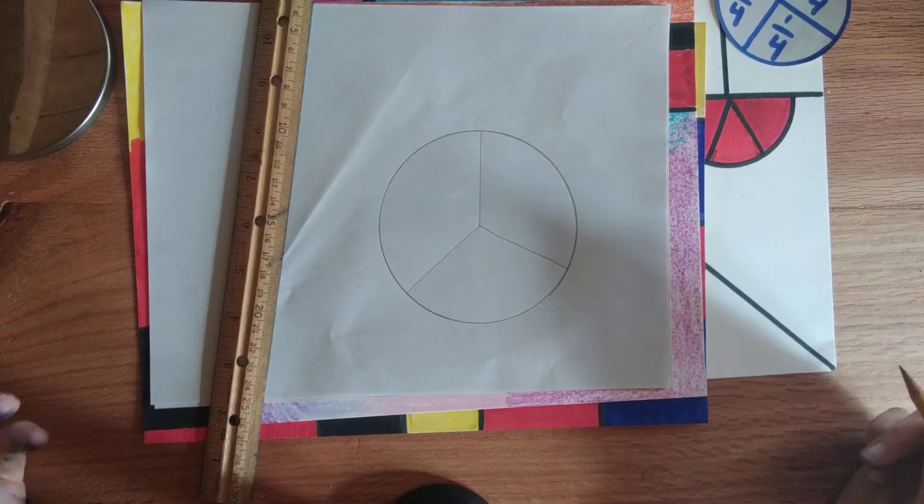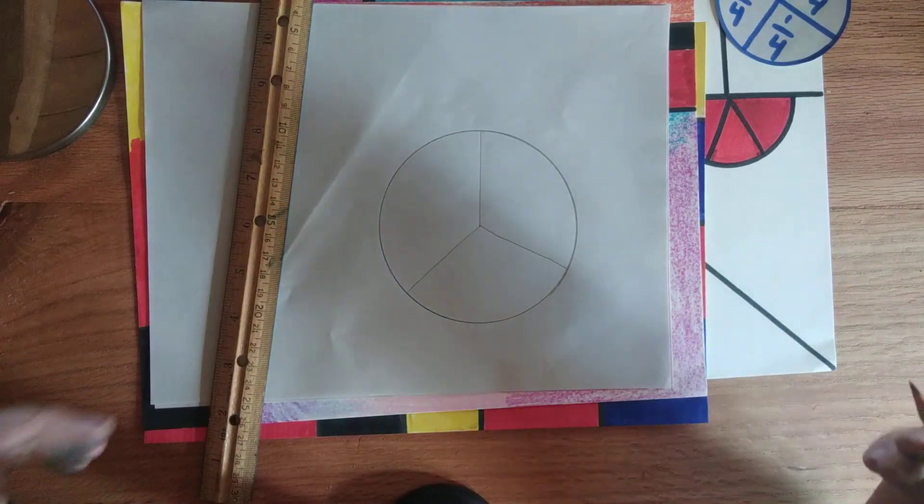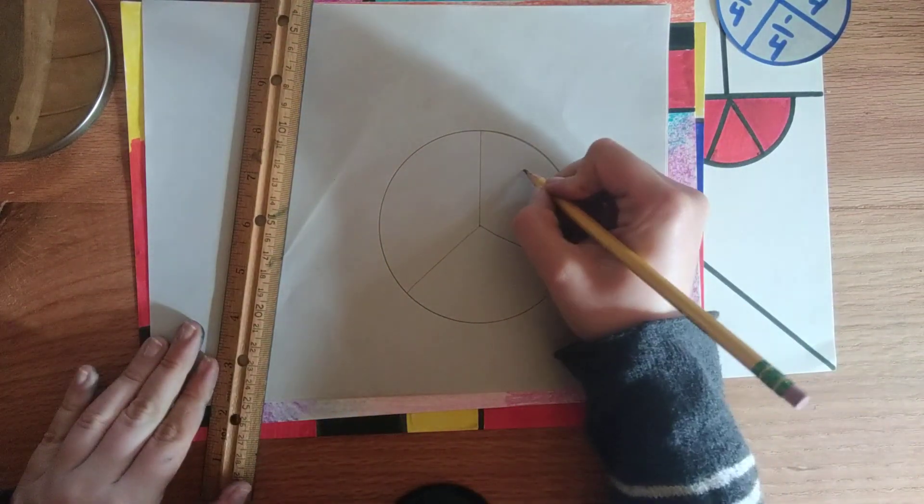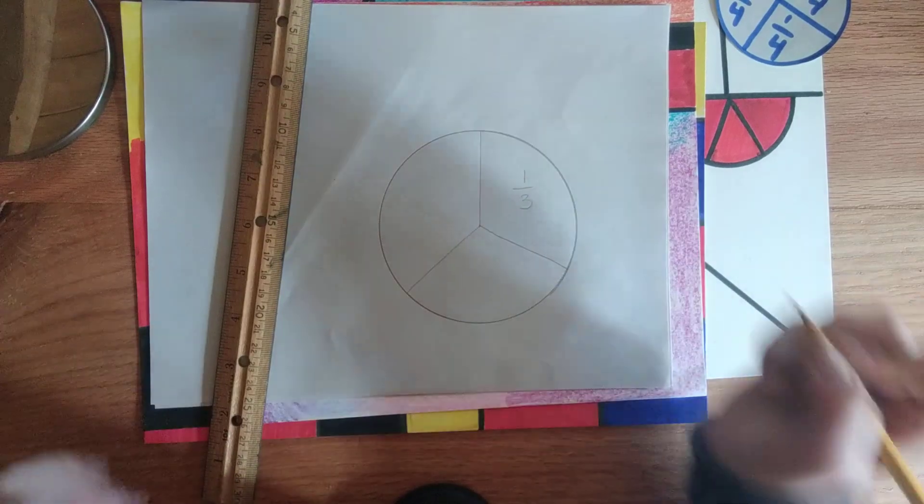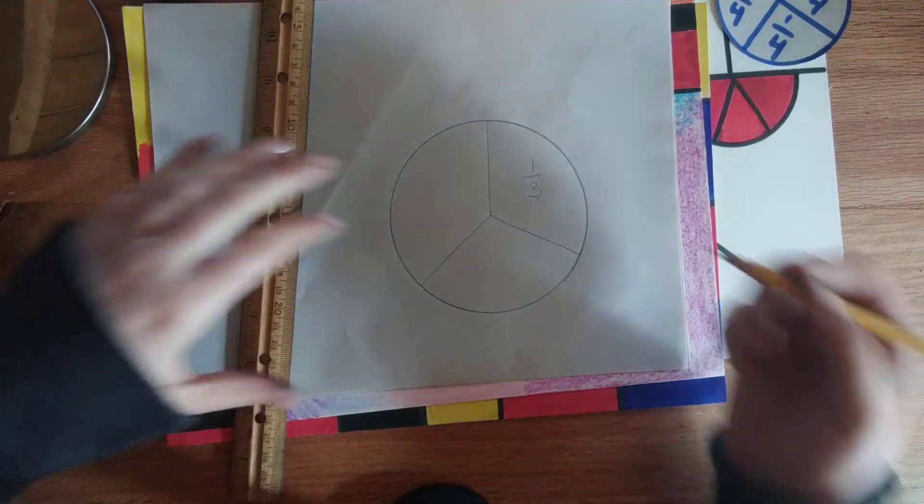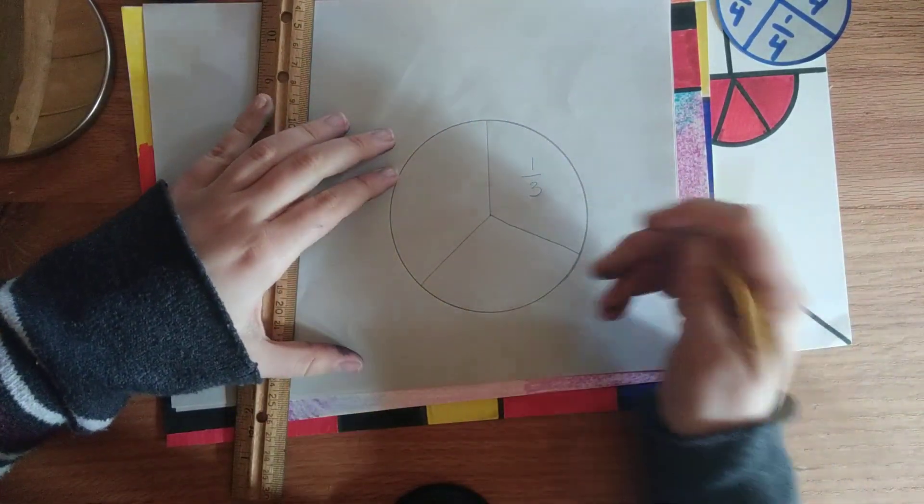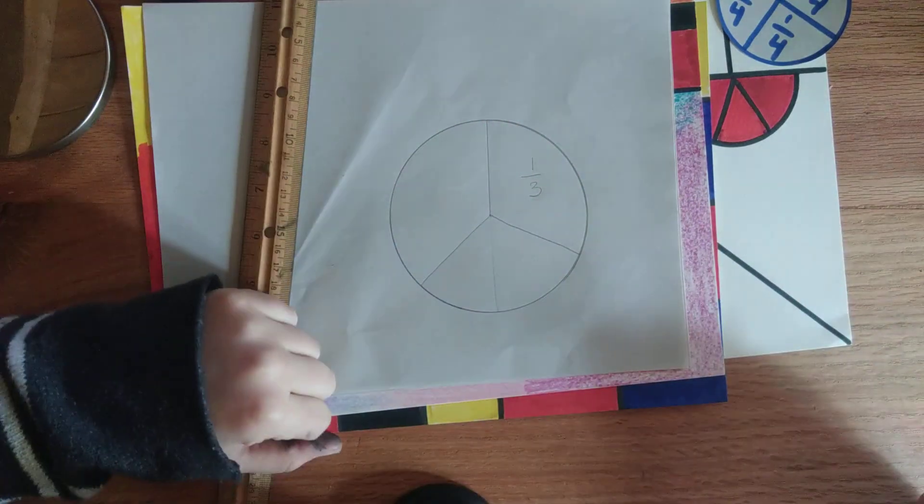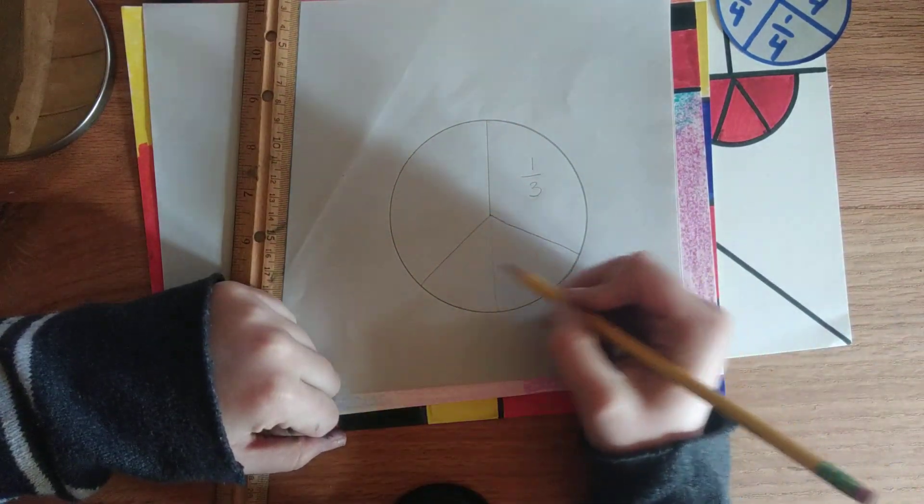Now, we're not perfect. We don't have to measure it or anything. But we know that there's three parts that are pretty much about the same size. That's one over three. There's three total parts. If you've ever seen a peace sign, it looks a lot like this.